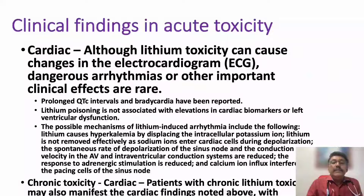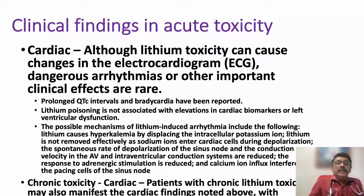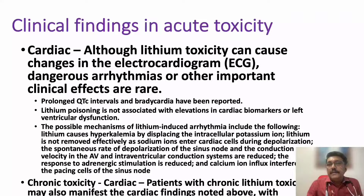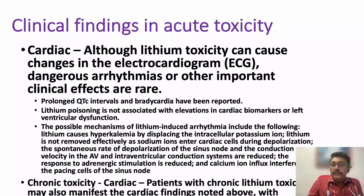Various types of arrhythmias are known in lithium toxicity, mainly because lithium causes hyperkalemia by displacing intracellular potassium ions. There are other mechanisms as well. Some patients can develop chronic lithium toxicity and suddenly present with overdose, given the very narrow therapeutic index. When treating a patient on lithium, always take an ECG to check for QTc prolongation, as that will be the earliest finding of lithium toxicity.